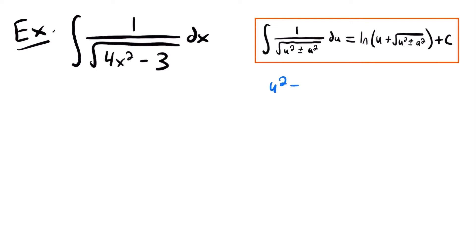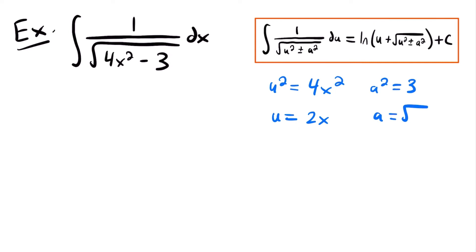So we'll have that u squared is equal to 4x squared, and a squared is equal to 3. And so if we take the square root of both sides of each of these equations, we can solve for u and a. We'll have that u is equal to the square root of 4 times x squared. The square root of 4 is 2, and the square root of x squared is just x, so we have u equals 2x. And then a will be equal to the square root of 3.